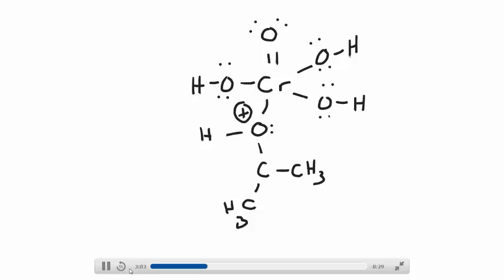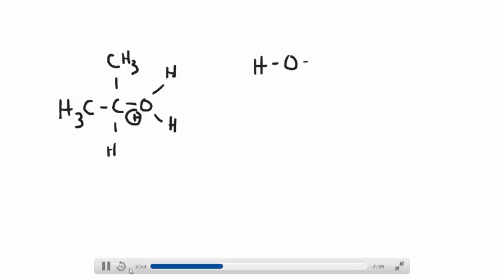And like other tetrahedral intermediates, you now need to do a proton transfer through solvent from the oxygen that has the proton to one of the others. So, our solvent here is our alcohol. And it will act as the proton acceptor. So, that's the proton transfer to solvent.